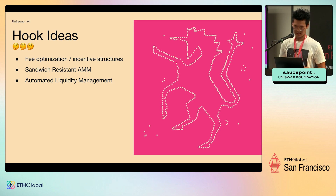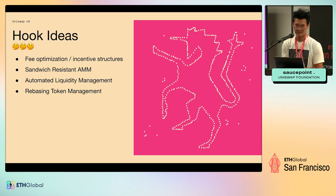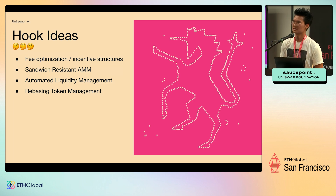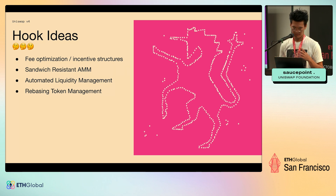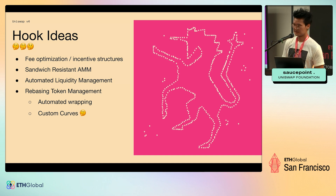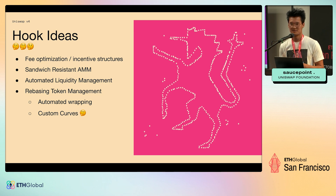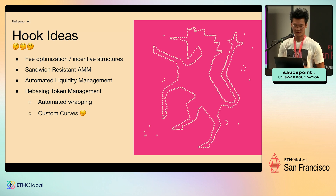There are a lot of fun liquidity management things you can do inside a hook. You could also support rebasing tokens like Aave tokens or Lido staked ETH — either by wrapping as wrapped staked ETH or by creating a custom pool that manages Lido staked ETH natively. There's also a feature called custom curves that lets you eject from the V3 swap math and implement your entirely own custom curve.